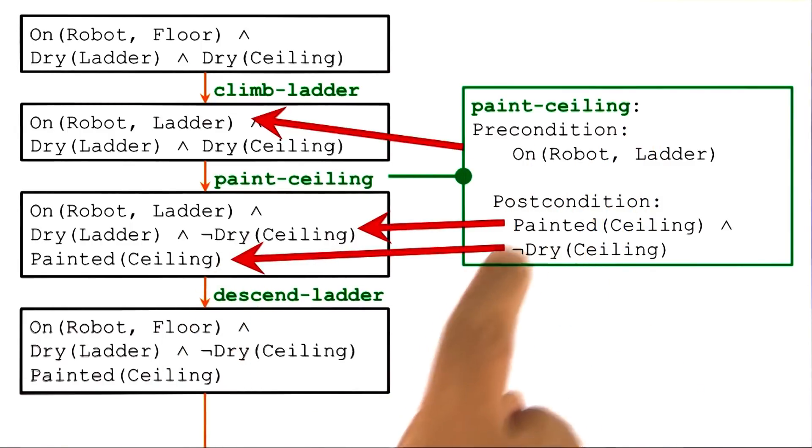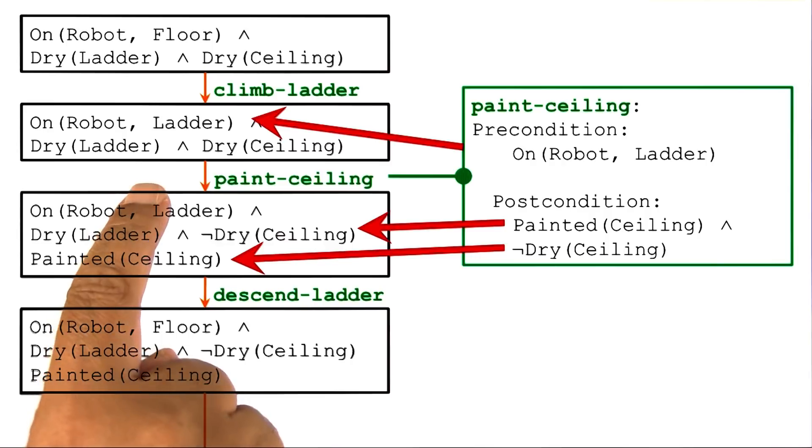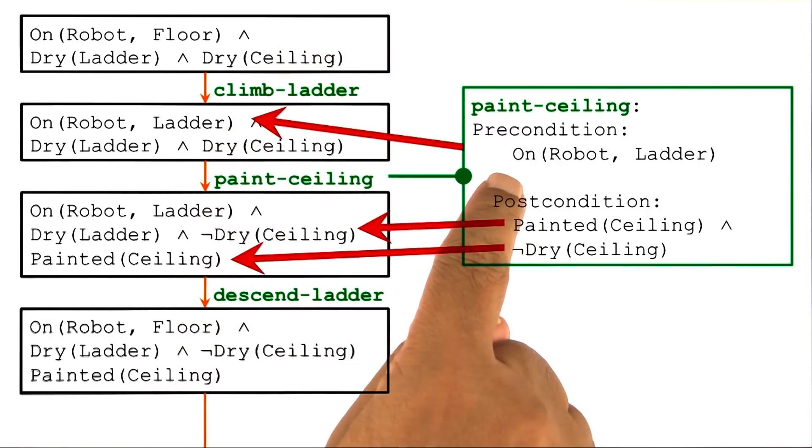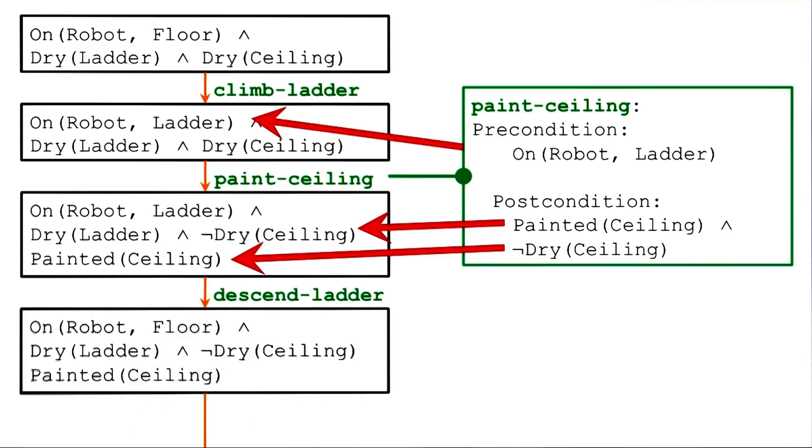Similarly, the postconditions of this operator directly match the assertions of the world in the successor state. So I have painted-ceiling here, there is painted-ceiling there. There is not-dry-ceiling here, there is not-dry-ceiling here. So this provides a very precise way of specifying the states and the operators and the exact connections between them.